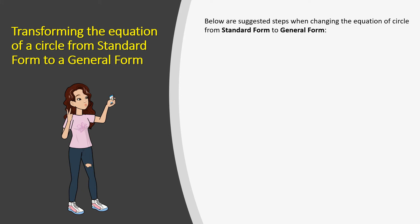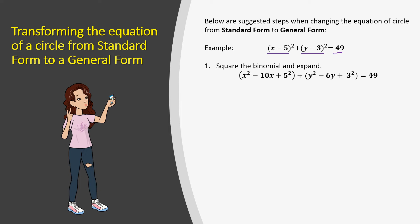Now let's convert standard form to general form. Here's our example: x minus 5 squared plus y minus 3 squared equals to 49. First, let's square the binomial and expand. For the first set, we have x squared minus 10x plus 5 squared. For the other set, we have y squared minus 6y plus 3 squared.